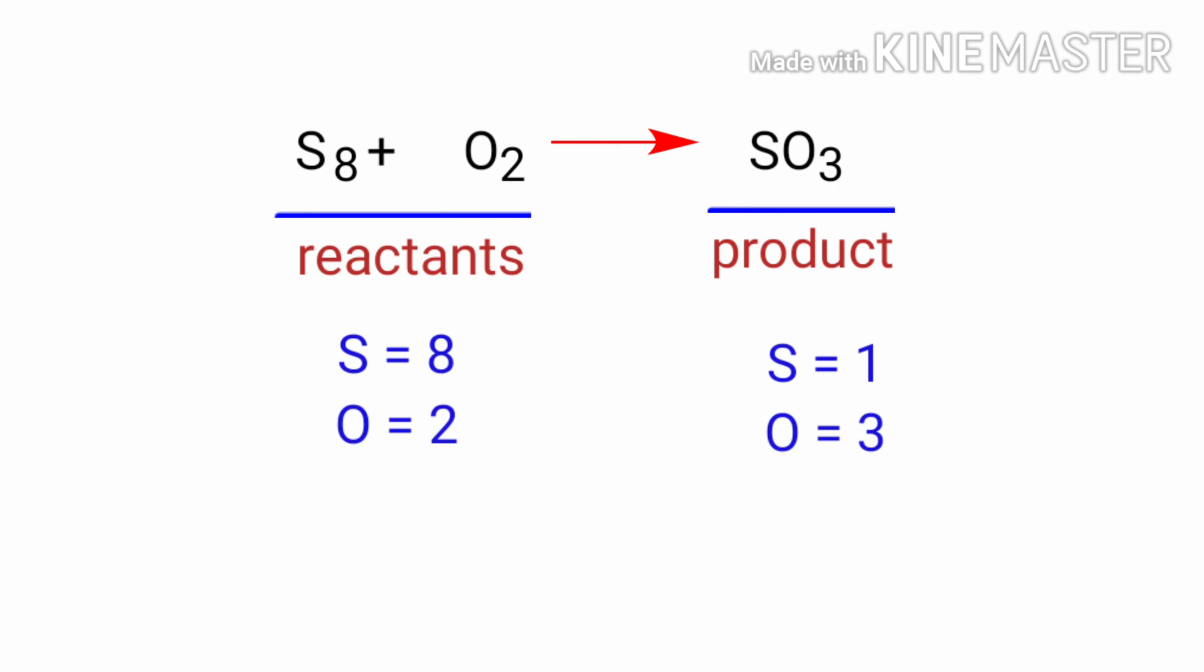To balance the chemical equation, we need to make use of coefficients. A coefficient is a number that we place in front of a chemical formula.